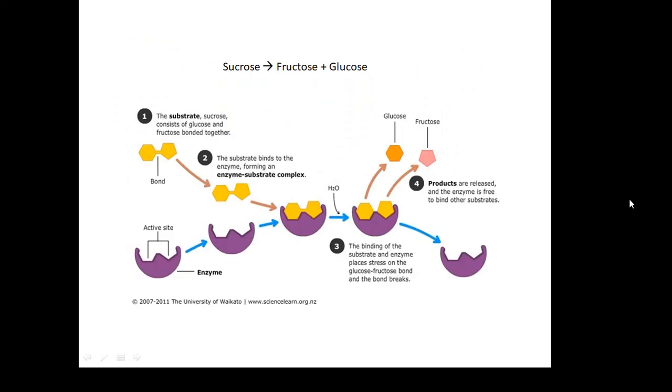Here's an example. The chemical sucrose is broken down into fructose and glucose by an enzyme. There you see the yellow sucrose molecule goes into the enzyme and it's broken down. We get glucose and fructose released.